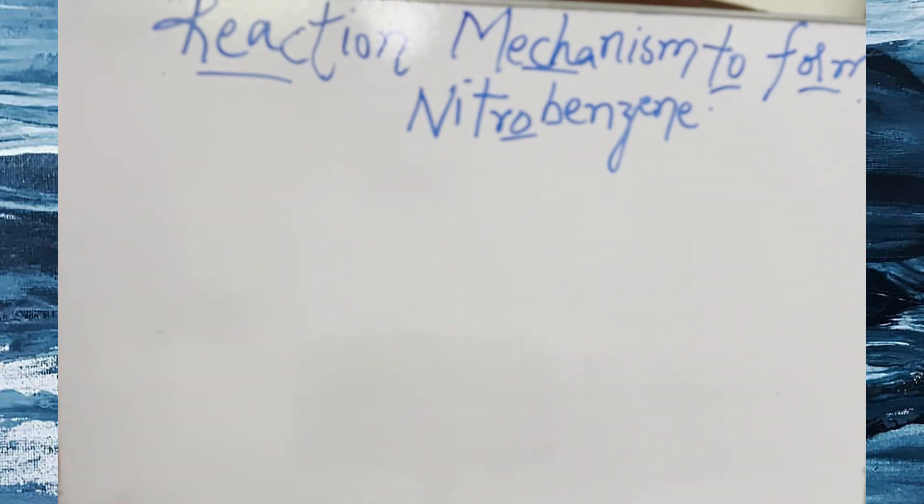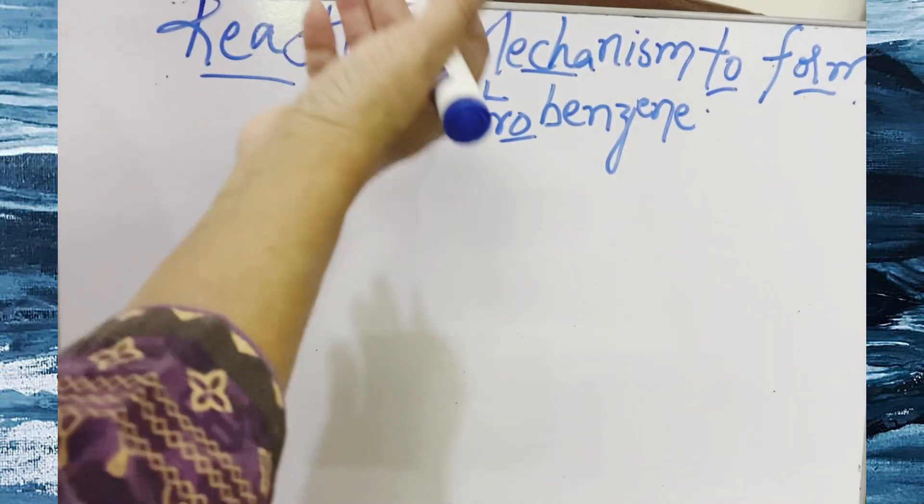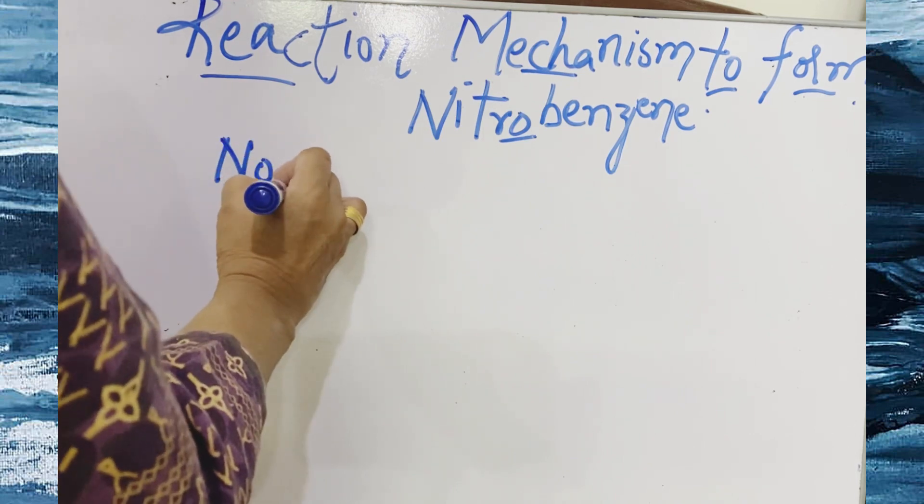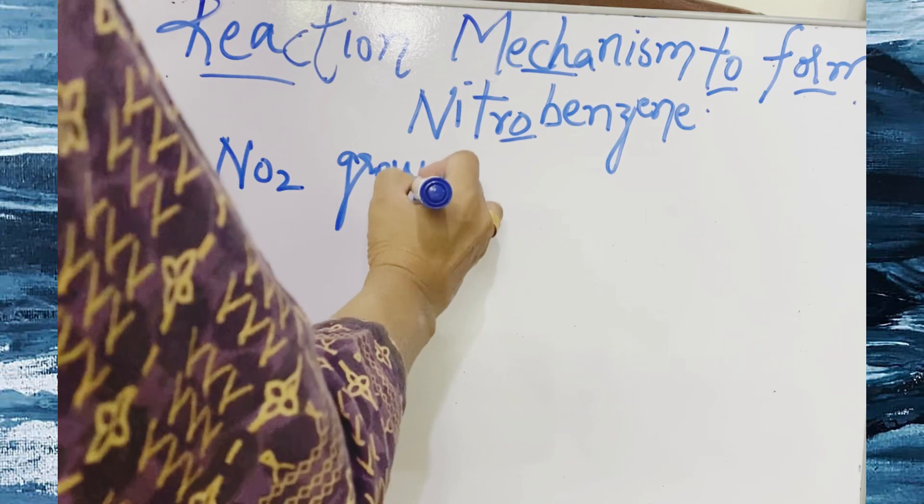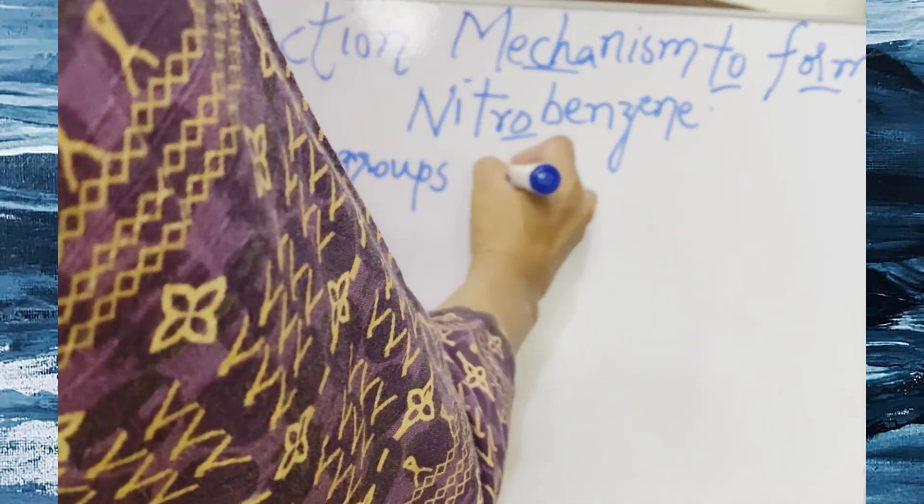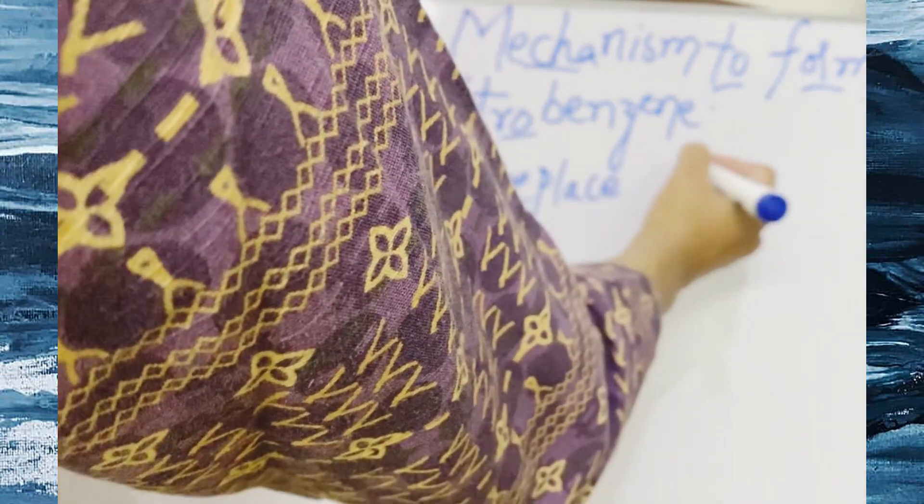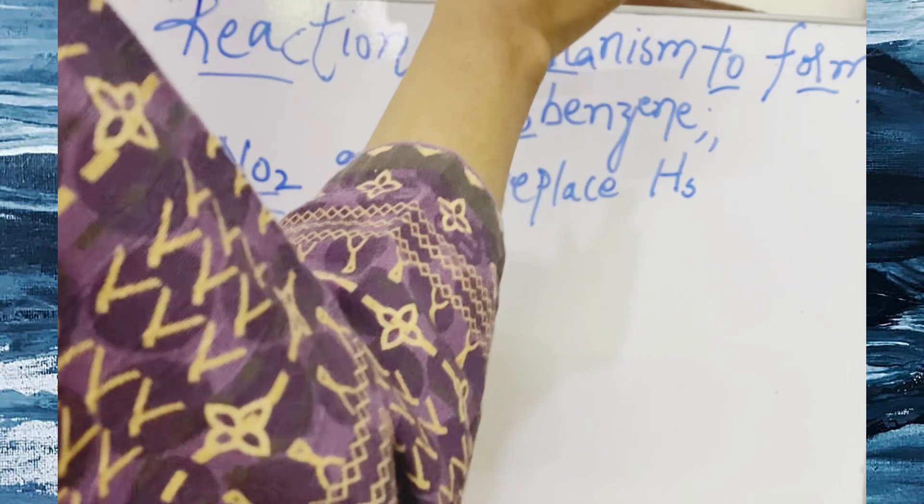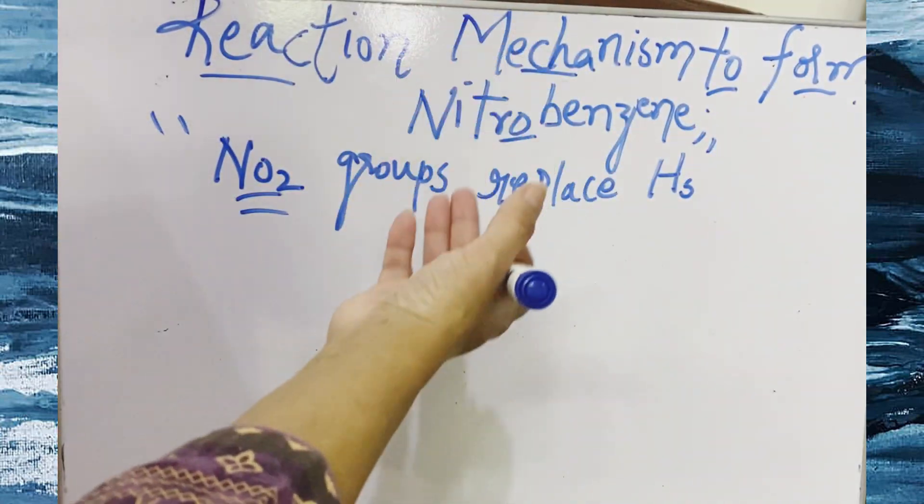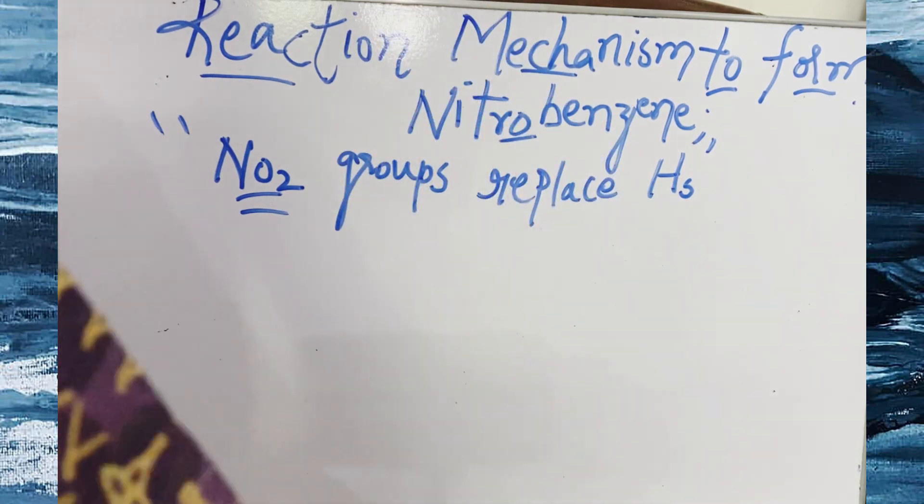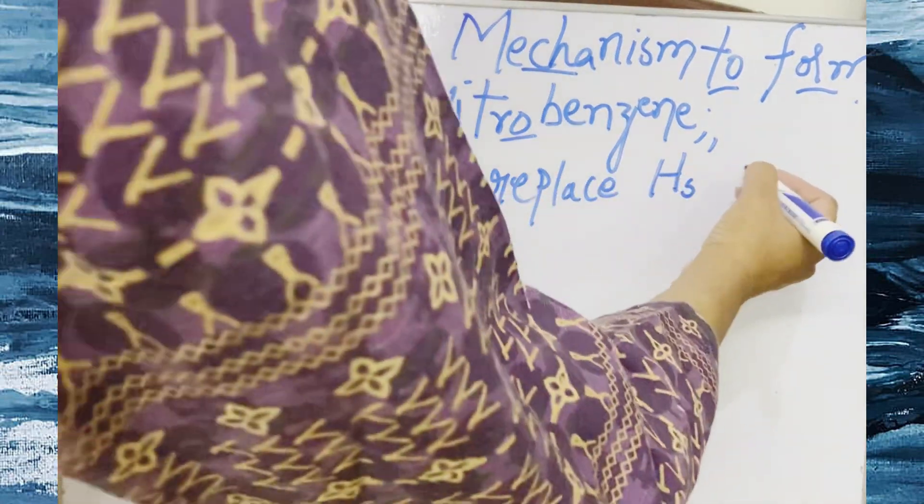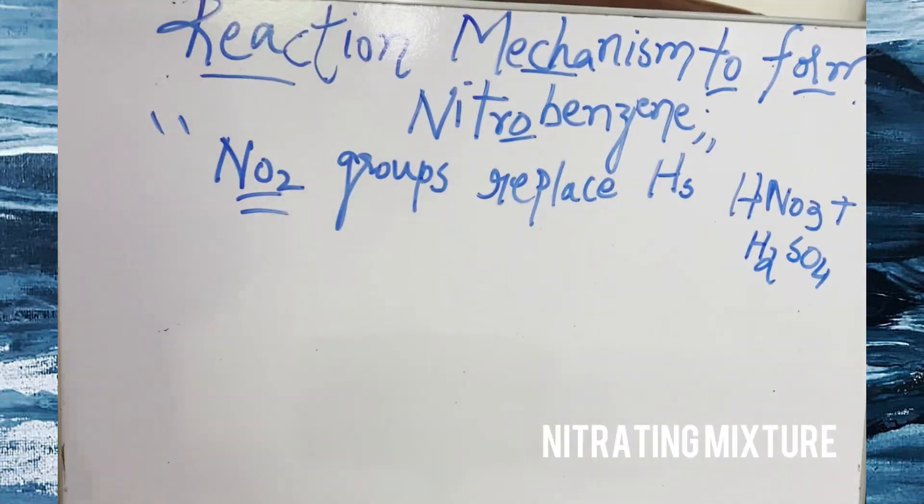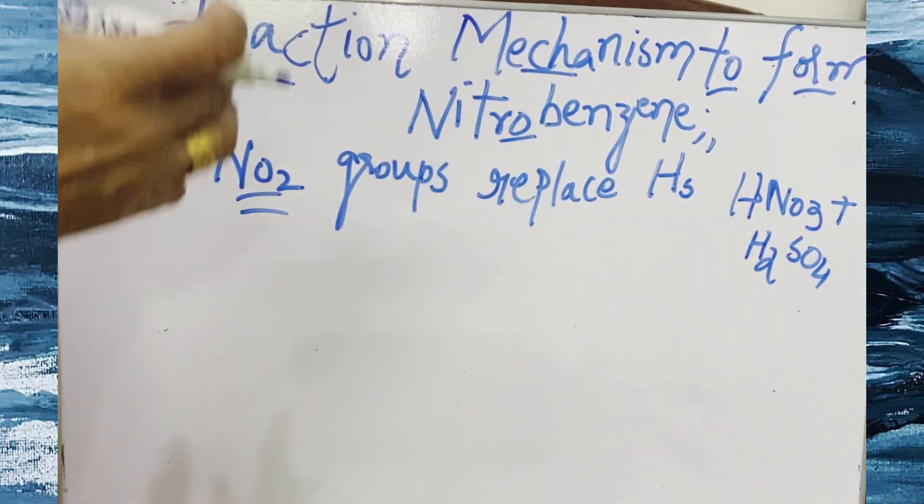So now what happens when aromatic hydrocarbons go through the process of nitration, which is very simple. What happens is that the nitro groups replace hydrogens by adding a mixture of some acids that is HNO3 plus H2SO4. We also call it nitrating mixture. The concentrated mixture of these two concentrated acids, nitric acid and sulfuric acid.